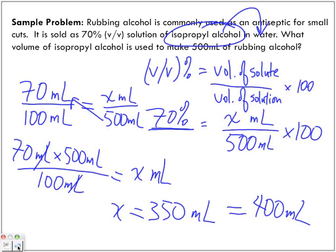Okay, so 400 milliliters of isopropyl alcohol. That is how much we are going to dissolve in water. For every 70 milliliters of isopropyl alcohol, we're dissolving it in 100 milliliters total solution.